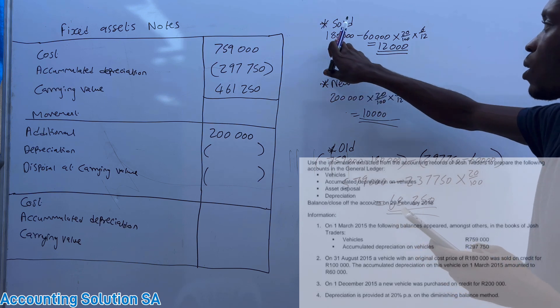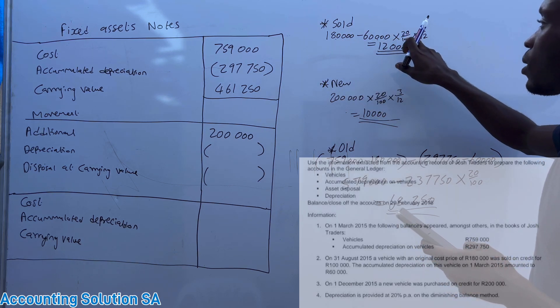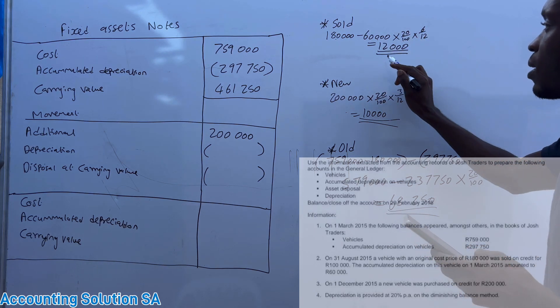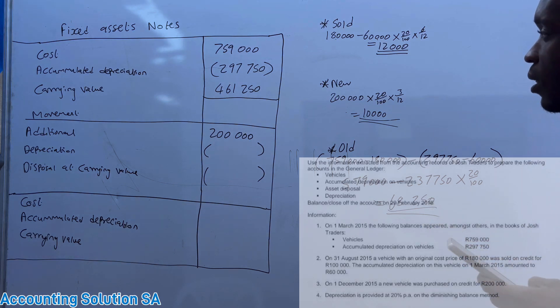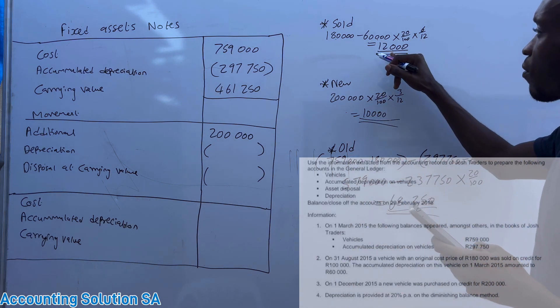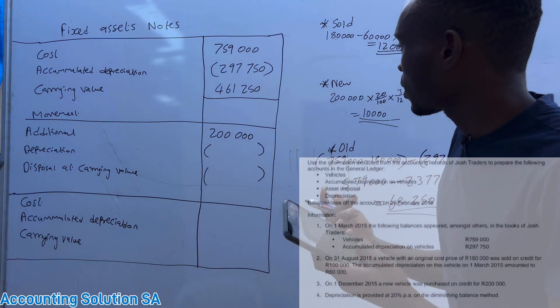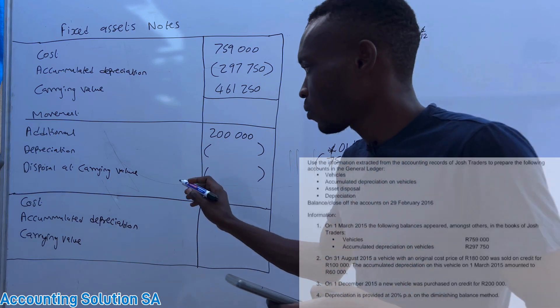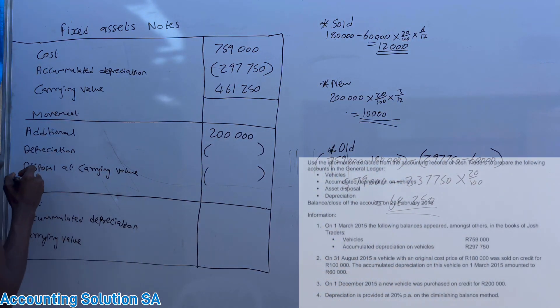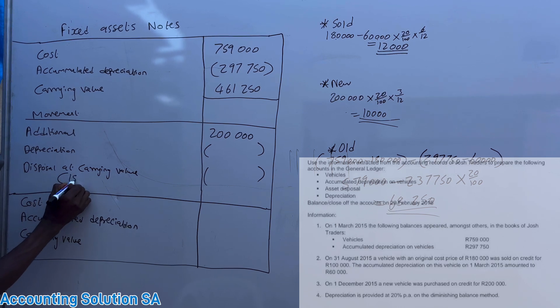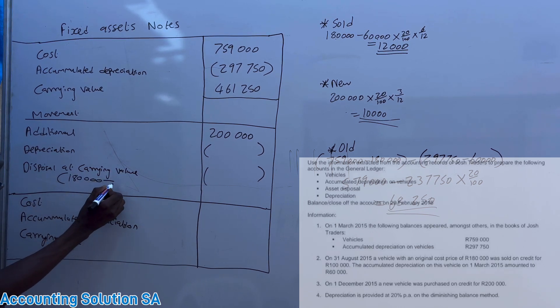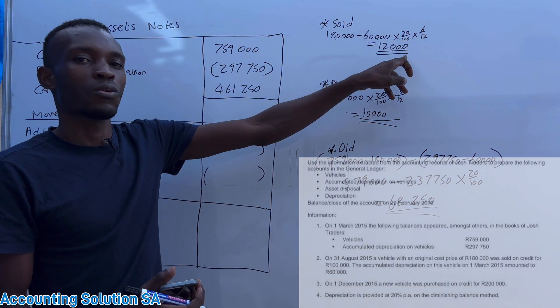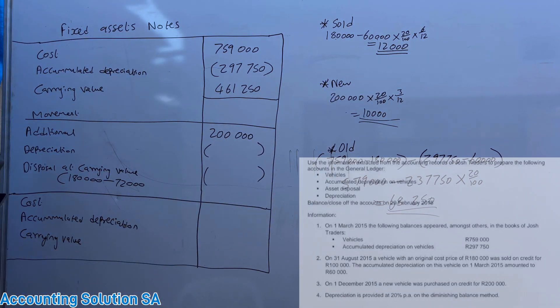Then we said 180 minus 60,000 multiplied by 20%, then multiplied by 6 over 12. Why? We want depreciation of that six months, then it gives us 12,000. Now because we have 12,000, we have a total depreciation. Now we're gonna add 12,000 plus 60,000 and it gives us 72,000, which means that now we can calculate disposal at carrying value by saying 180,000 minus 72,000.